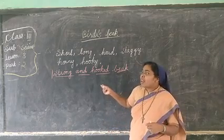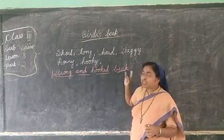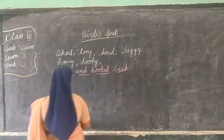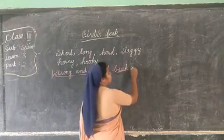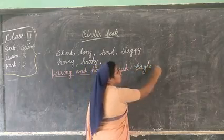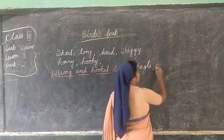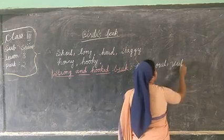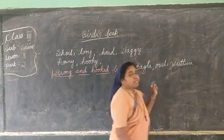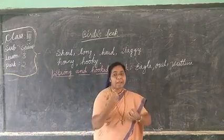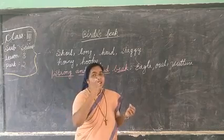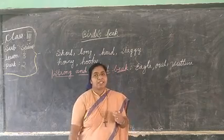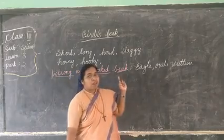Where can we find this strong and hooked beak? We can find it in birds like eagle, owl, and vulture. Have you observed their beak? It is curved to tear the meat and flesh.